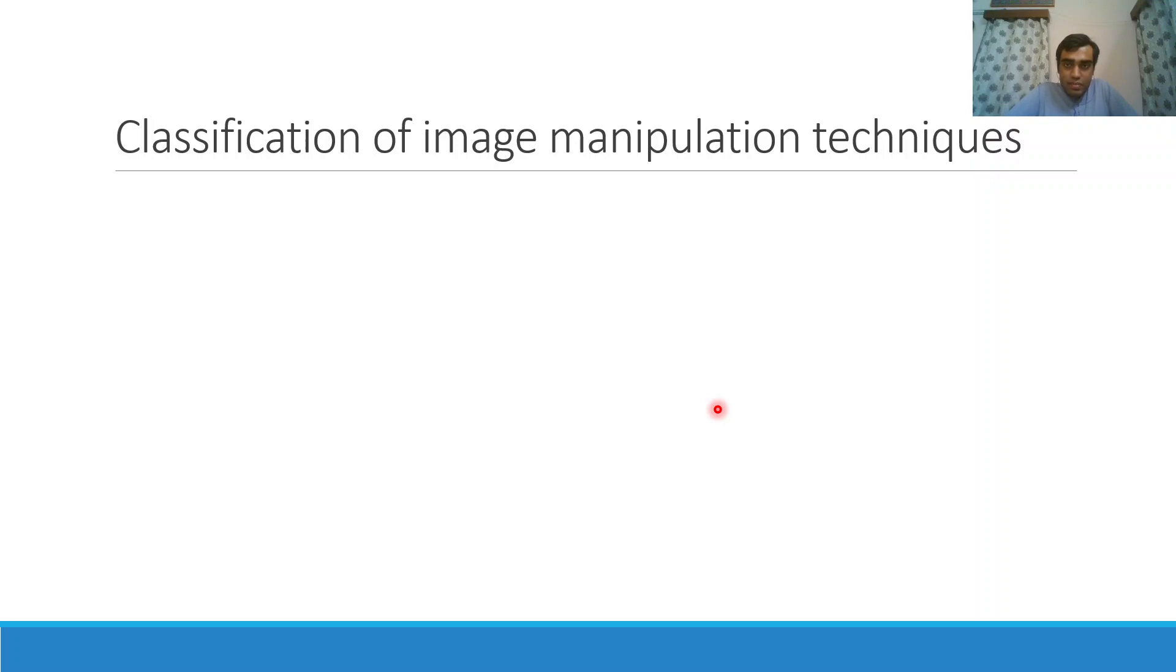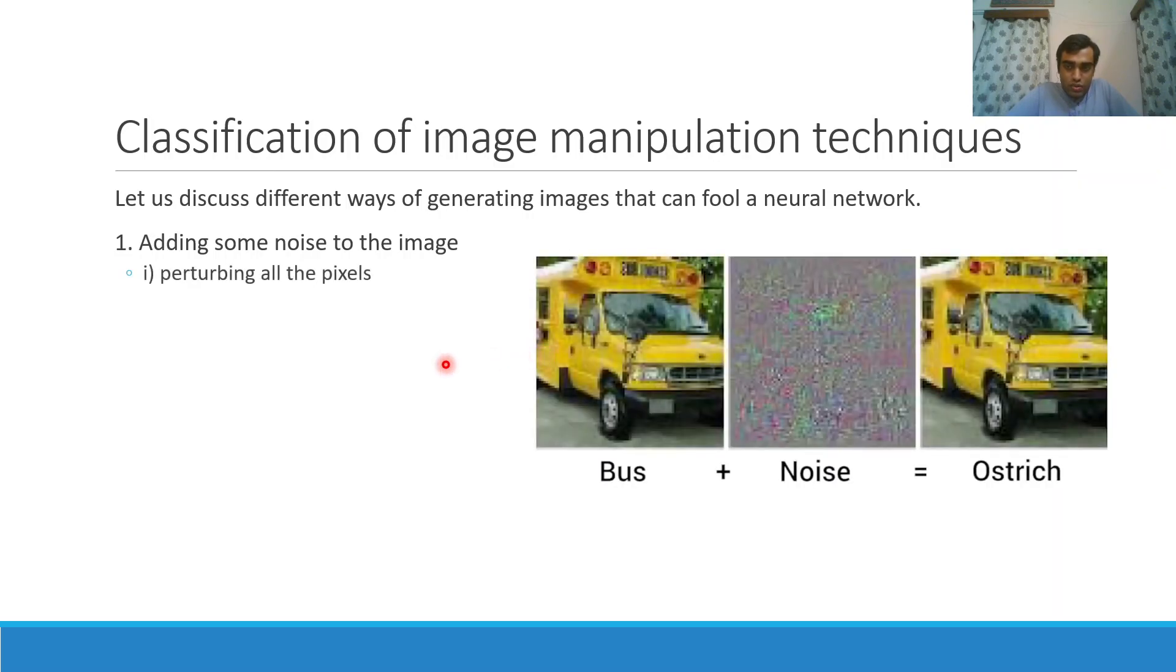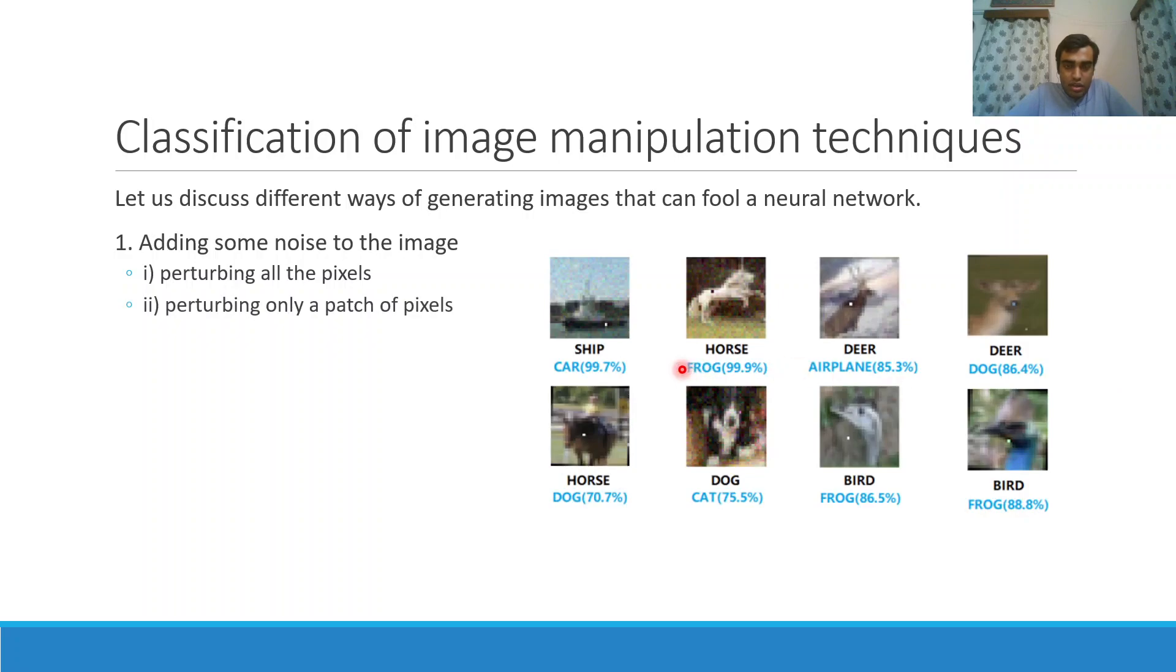Now let's try to classify the image manipulation techniques. First technique is to add some noise to generate the adversarial image digitally. There are two methods: we can try to perturb all the pixels, like we take the picture of a bus, add some noise, and fool the DL network into thinking that this is a picture of an ostrich. Here all the pixels have been perturbed. Second option is to perturb only a few pixels or only a patch of pixels. This is called adversarial patch. Here we have taken an extreme example of one pixel attack where only one pixel is perturbed.